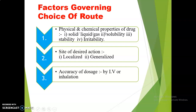The first factor is the physical and chemical properties of a drug, which is an important factor taken into consideration while choosing the appropriate route. The physical property of a drug includes its availability in solid, liquid, or gaseous form. If the drug is available in solid form, it should be administered by the oral route. In the case of a gaseous form, drugs should be administered by the inhalation route. Regarding solubility, aqueous soluble drugs are administered by different types of injection, but oily injections are generally given by the intramuscular route.